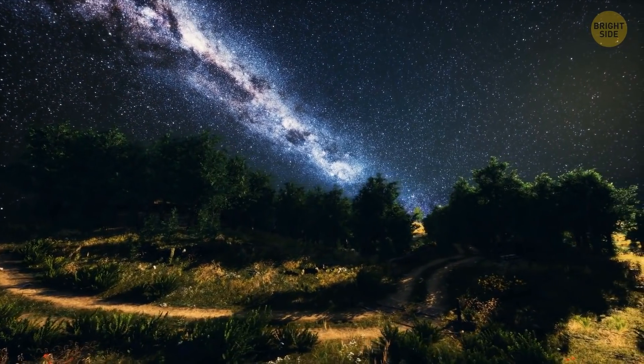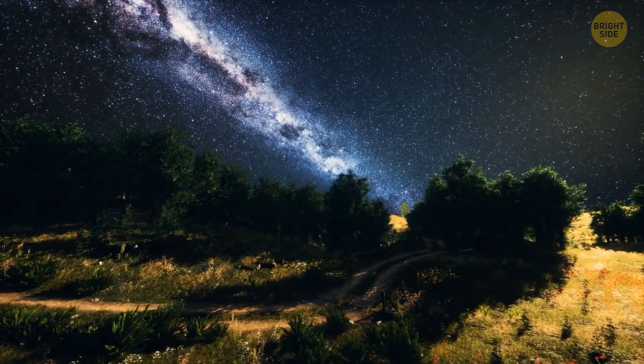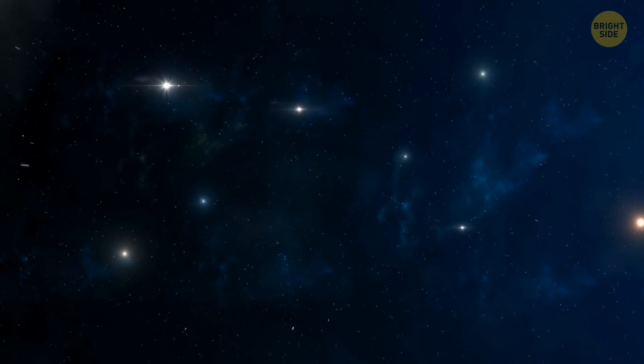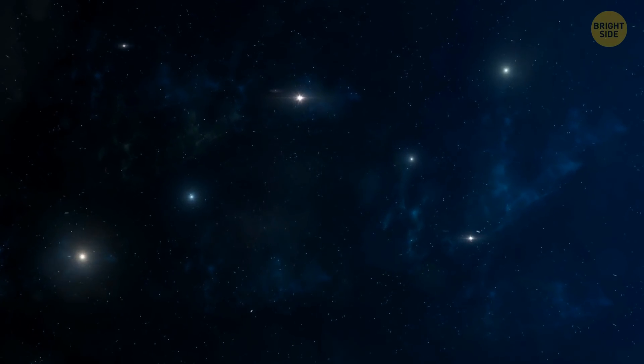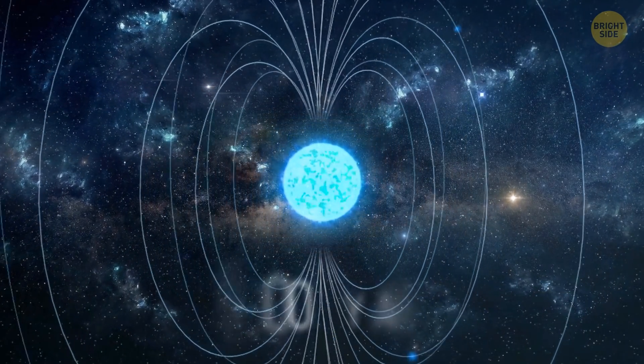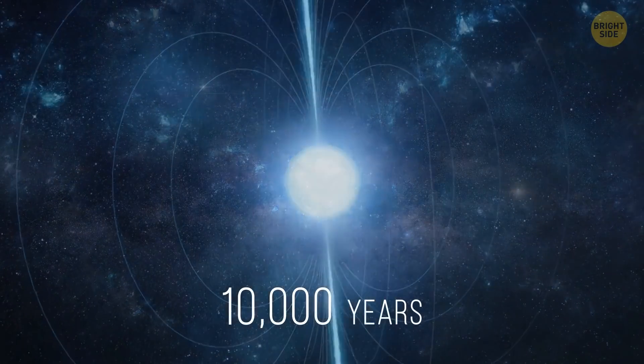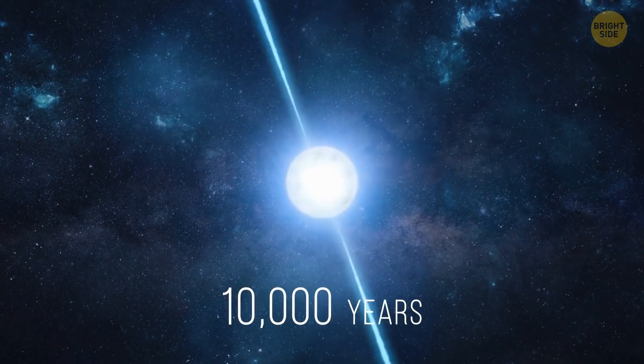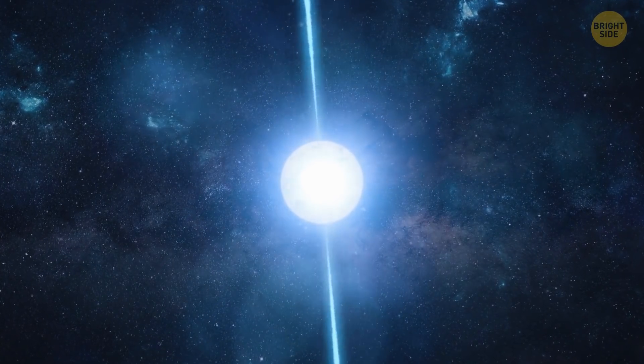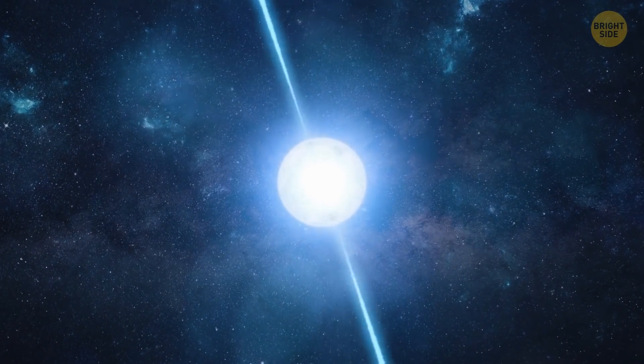Scientists only know about no more than 10 magnetars in our home Milky Way galaxy. They don't know for sure what makes these stars so terrifyingly magnetic. Whatever it is, magnetars don't seem to last long. After 10,000 years or so, they return to a more familiar neutron star state. They're still extremely magnetic, super-dense, but not so extreme.